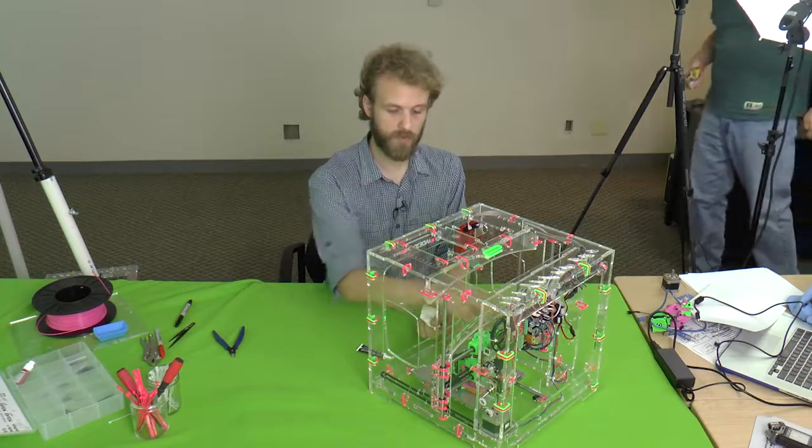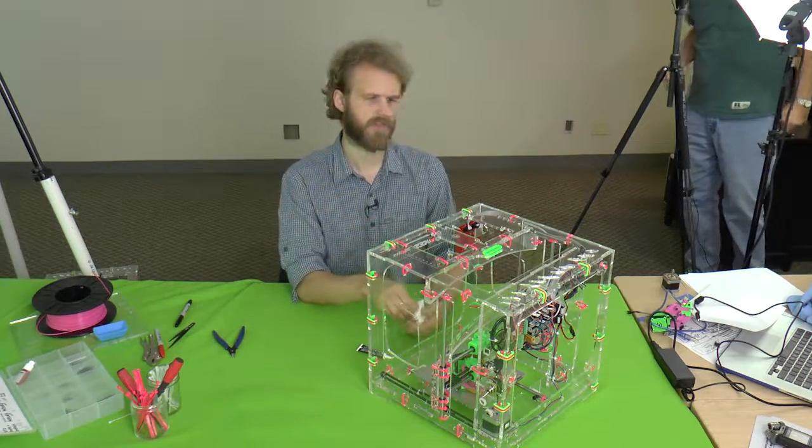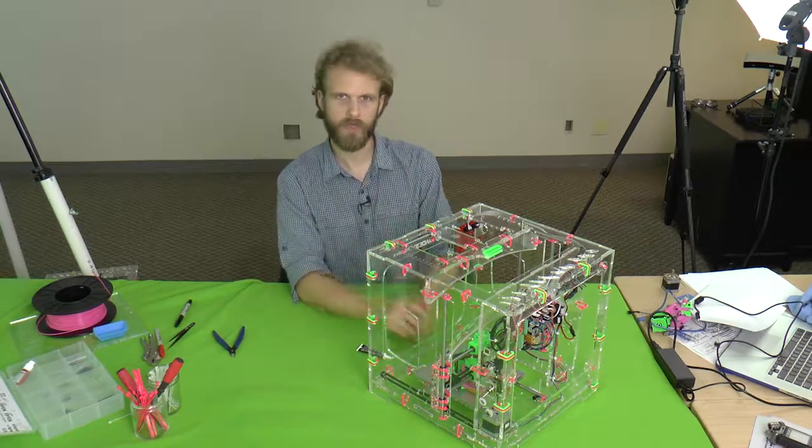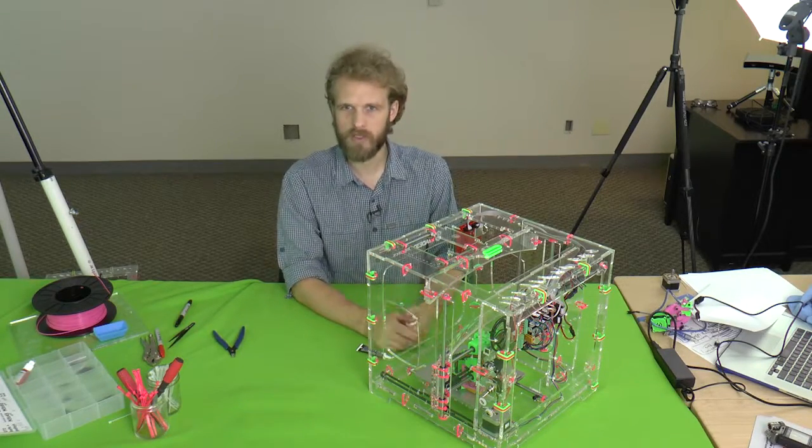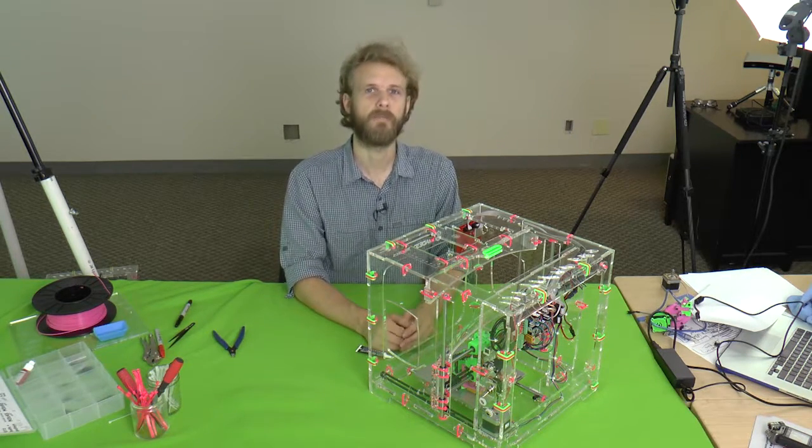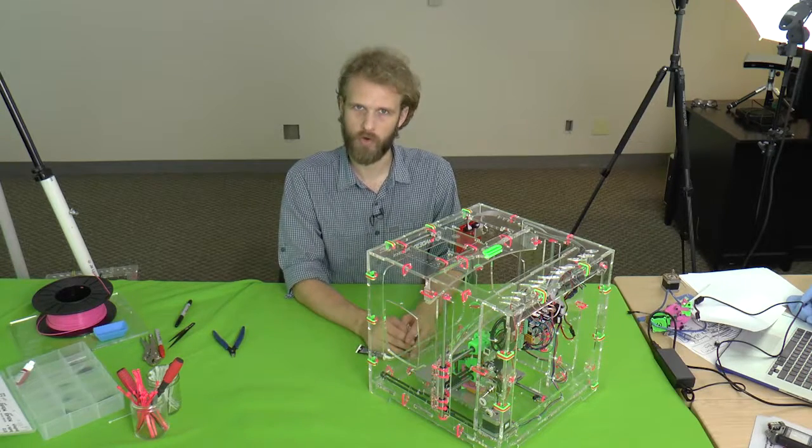But for the smooth rod, you want a thinner thing. Something like super lube is very popular among different 3D printer builders. But honestly, it all works fine, and everything is better than nothing. Maybe not olive oil.